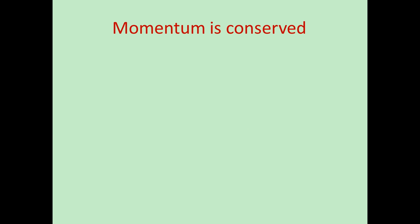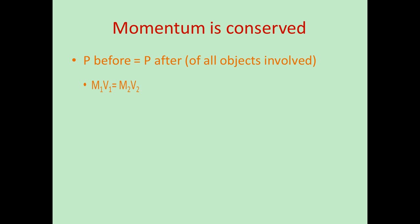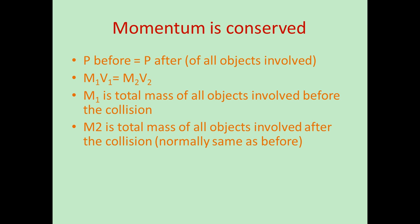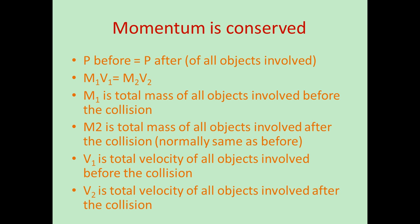Momentum is conserved, so it will be the same either side of the collision. That shows the equation P equals mv, because you've got m and v before equal to m and v afterwards — before and after.